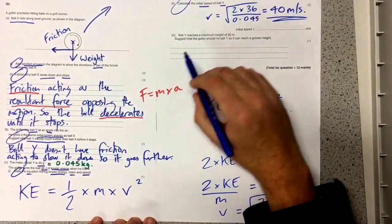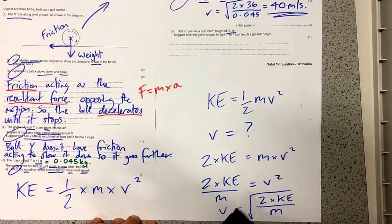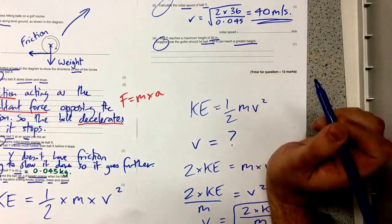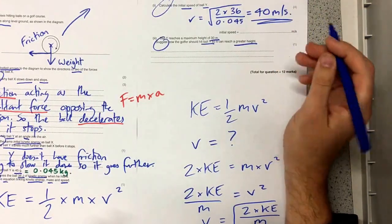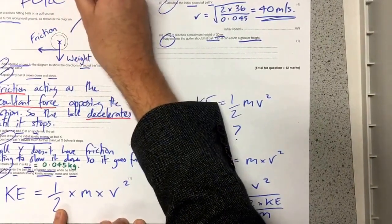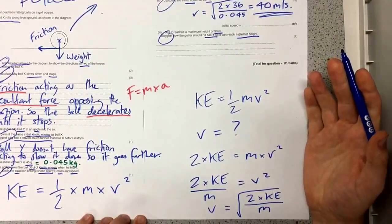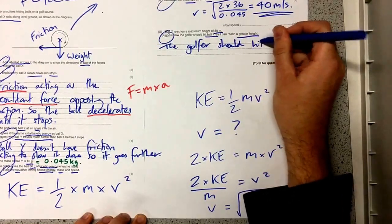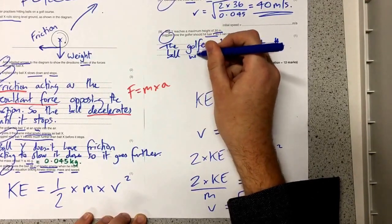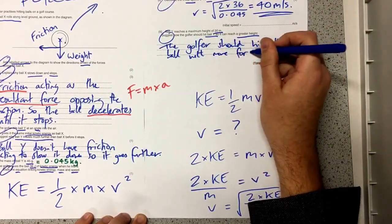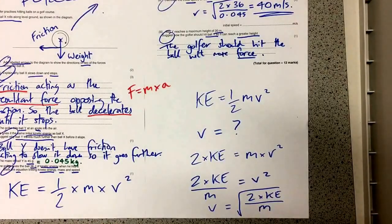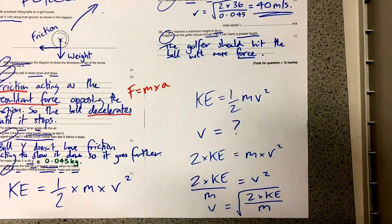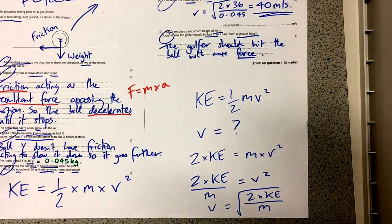Perfect. Next question. Ball Y reaches a maximum height of 30 meters. Suggest how the golfer should hit ball Y so it can reach a greater height. Well there's a few ways you can answer this question but this whole question has been all about forces. So let's make life easy for ourselves. The golfer should hit the ball with more force. Easy. Don't say hit it harder because this is a physics question. We don't use words like harder in physics to describe hitting something with more force. Use the right language and you'll get the marks.